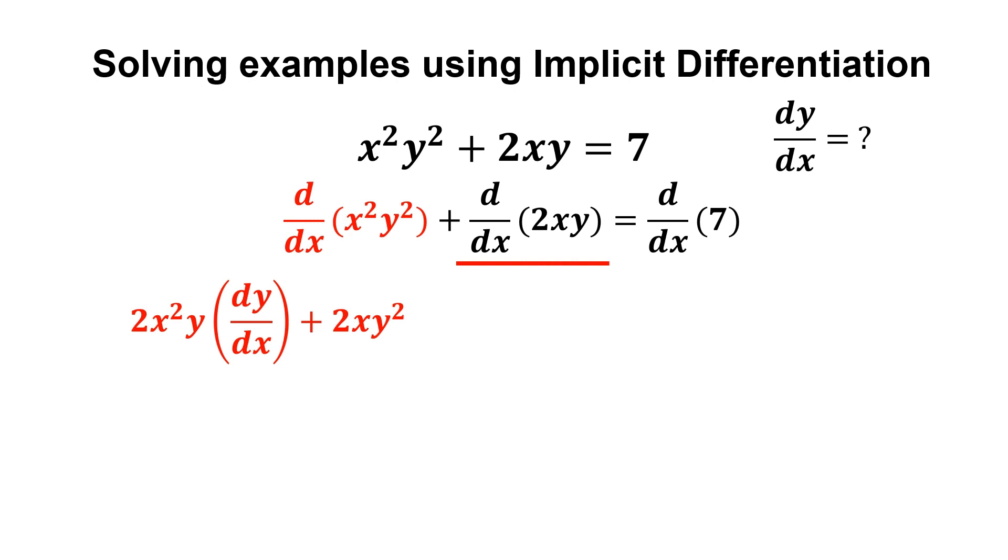Now, for the second term in the equation, we use the product rule again because we have the product of 2x and y. We do the same thing here, copy back the first term and multiply it by the derivative of the second term. Then, copy back the second term and multiply it by the derivative of the first term.